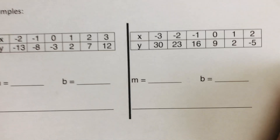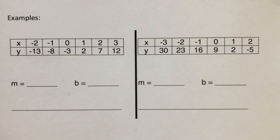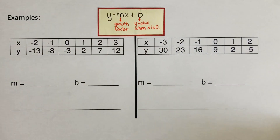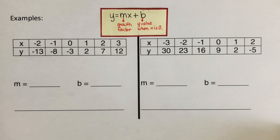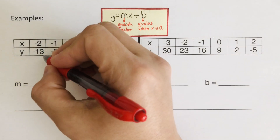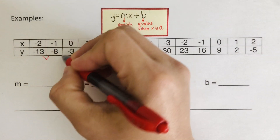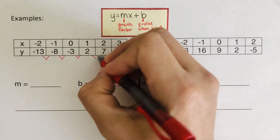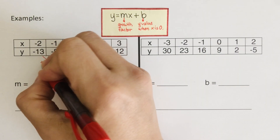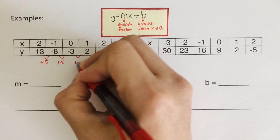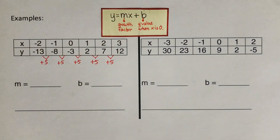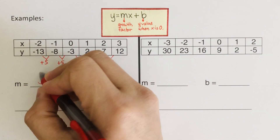Let's move on to the next example. We look for the growth factor. Each number is added with 5 — plus 5, plus 5, plus 5, plus 5, plus 5. So m is 5.